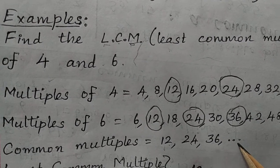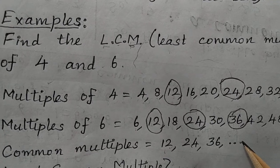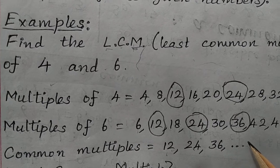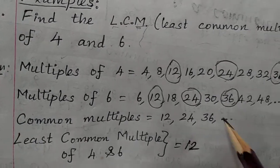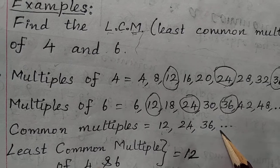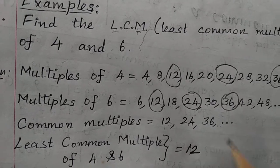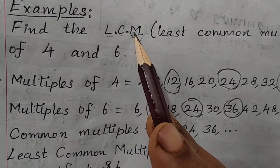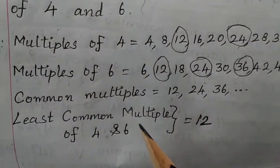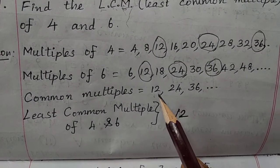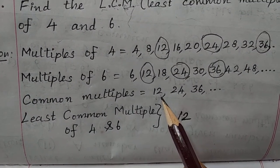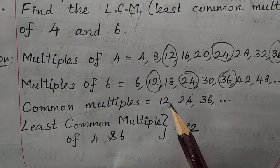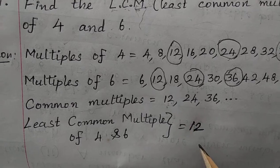We can find as many multiples as we want. There is no end to multiples, so you should put 'and so on' or 'etc.' rather than a full stop. The smallest number of common multiples of 4 and 6 is 12. So the least common multiple of 4 and 6 is 12.